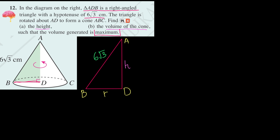When we see maximum, we use the second derivative to prove something is maximum. First, we're going to find the differentiation. Since they mention the volume is maximum, we know it's dV over something. We are looking at height, so we can say it's dV over dh.